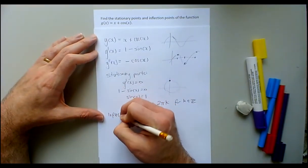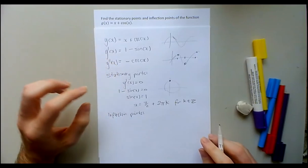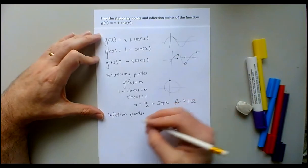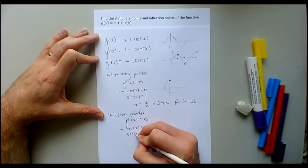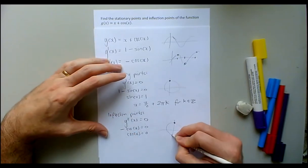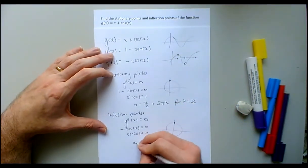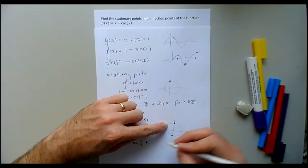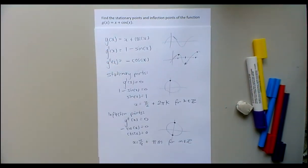Now for inflection points: they happen when the second derivative switches between positive and negative, so g''(x) = 0 means -cos(x) = 0, which means cos(x) = 0. On the graph, that's at x = π/2 plus every multiple of π from there. So the candidates are x = π/2 + πm, for integer m — I'll use m instead of k since I've already used k.